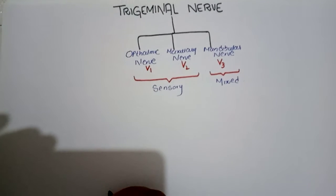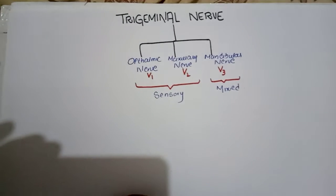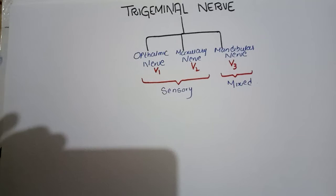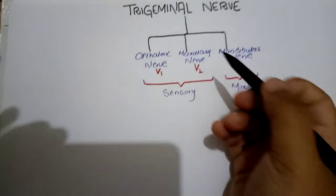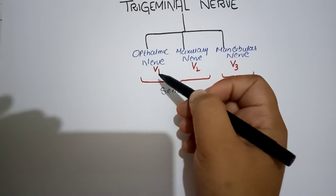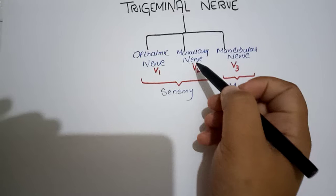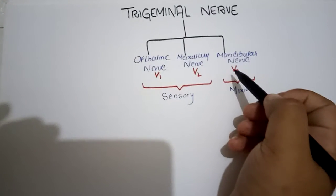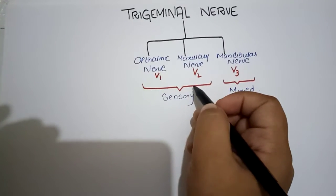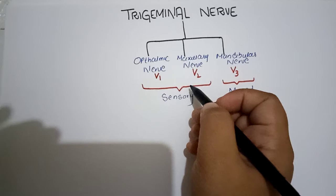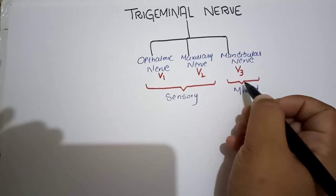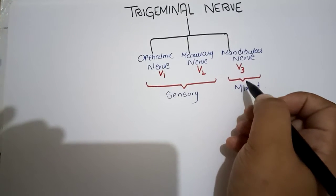Today my topic is the trigeminal nerve, which is the fifth cranial nerve, and there are a total of three branches of the trigeminal nerve: the ophthalmic nerve, the maxillary nerve, and the mandibular nerve. The first two nerves of the trigeminal nerve are sensory in nature, and the mandibular nerve is the mixed nerve.